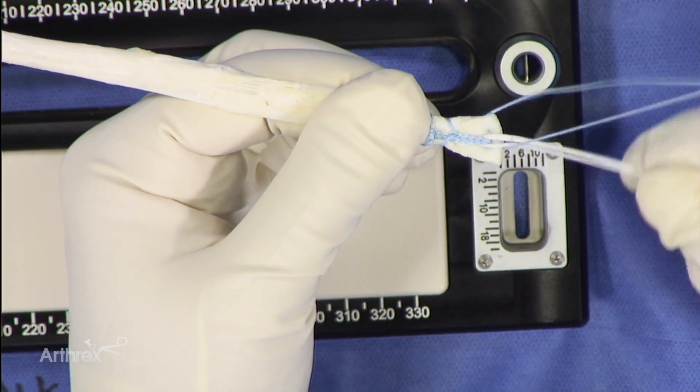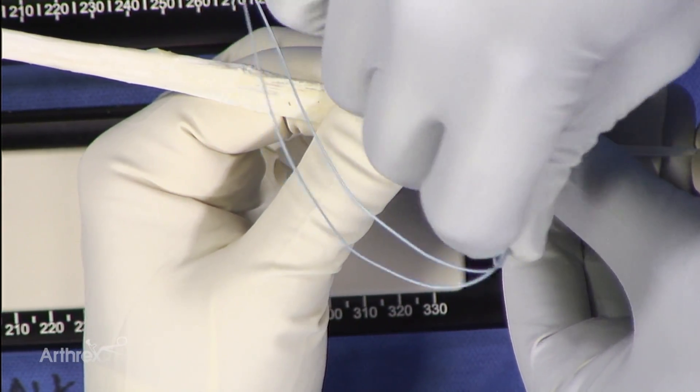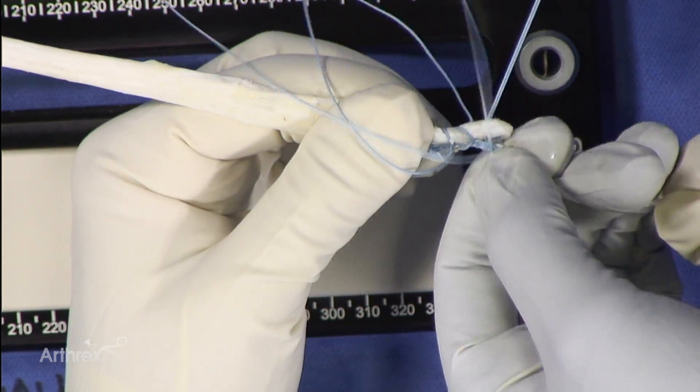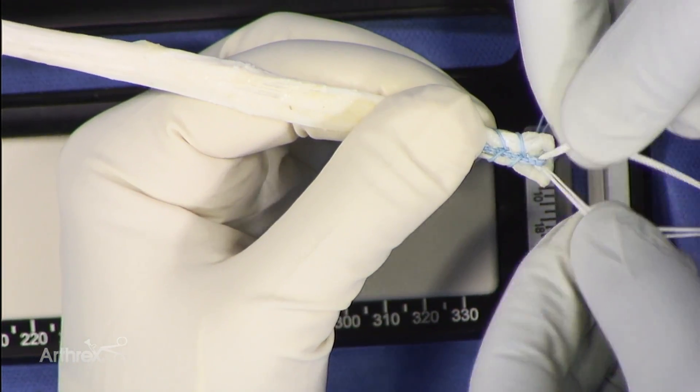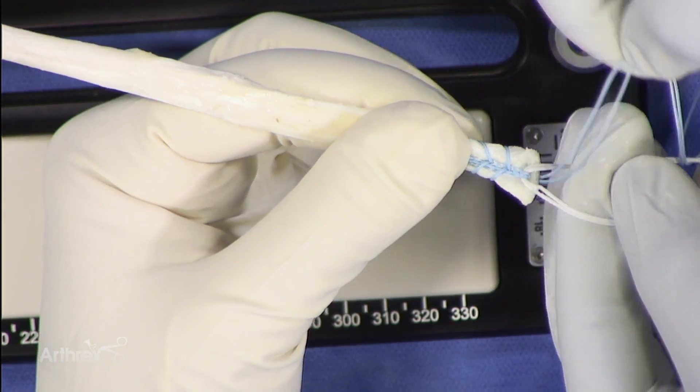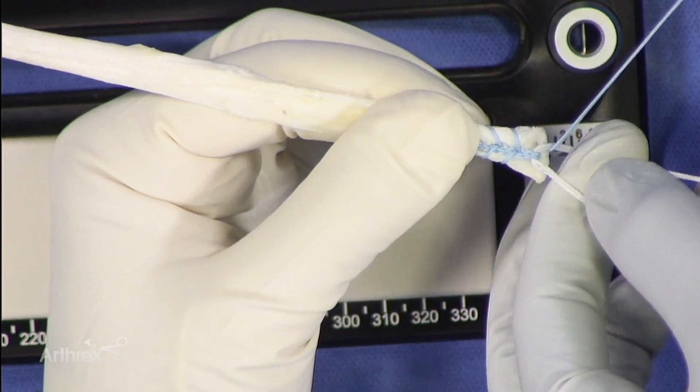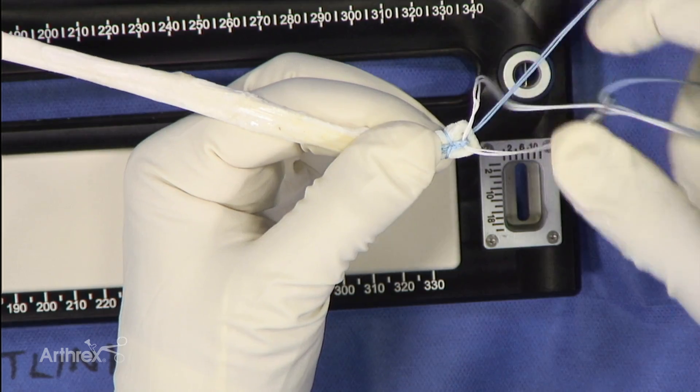And it's very important through this step that you grab the fiber tag each time. Come through again. And now you can see we've captured the RT, but it's not so tight that it doesn't move. It'll still easily move through.